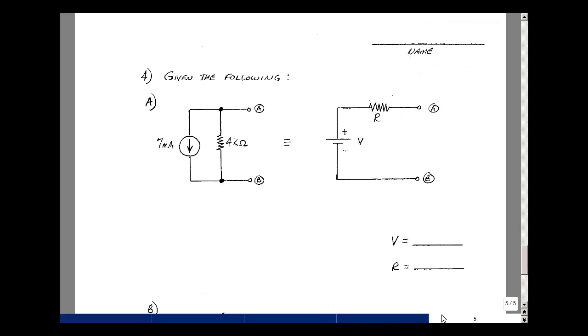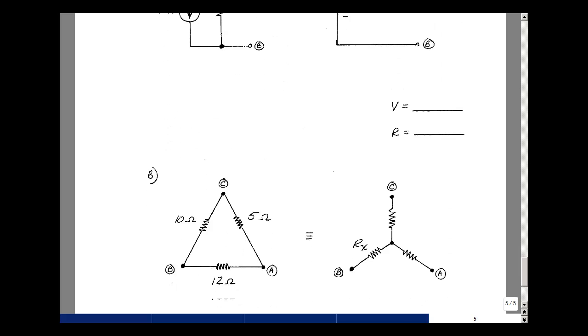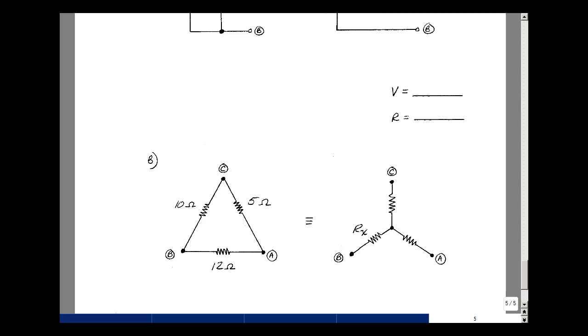And lastly, for problem four, can you do a source transformation and convert this current source in parallel resistance into a voltage and a resistance with the polarity shown here? And then problem 4b, given a delta, can you find the resistor R sub X in the Y?